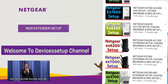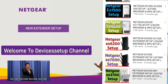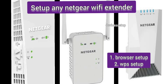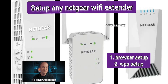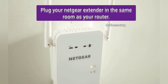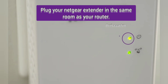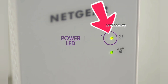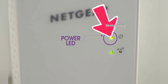Welcome back to Devices Setup channel. Today I will show you how to set up any Netgear Wi-Fi extender in just two minutes. First of all, you need to plug the Netgear extender in the same room as your router and wait for its power LED to turn stable.